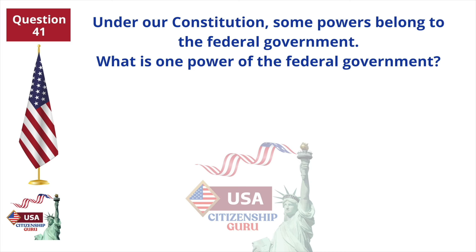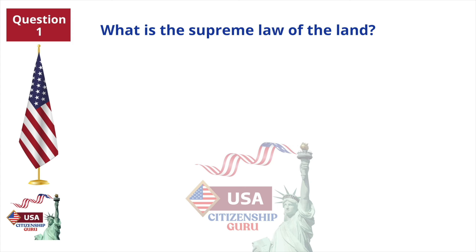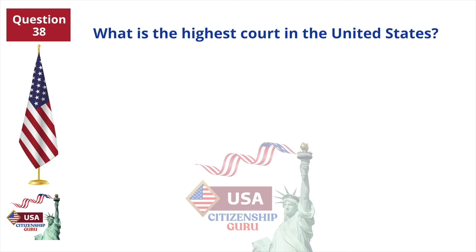Under our Constitution, some powers belong to the federal government — what is one power of the federal government? To print money. What is the capital of the United States? Washington, D.C. What is the supreme law of the land? The Constitution. What is the highest court in the United States? The Supreme Court.